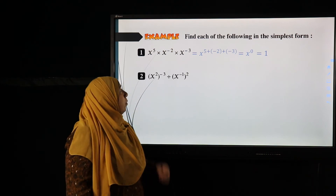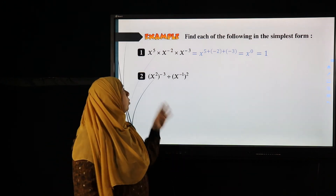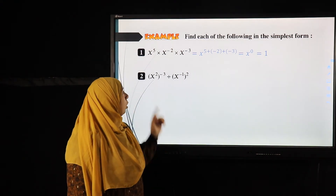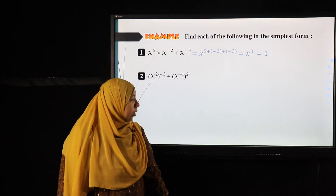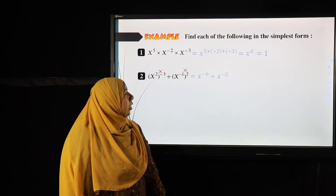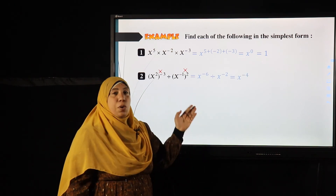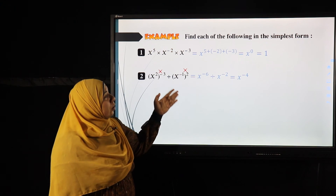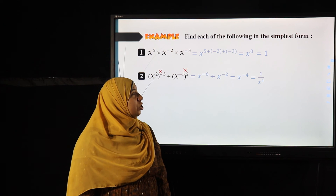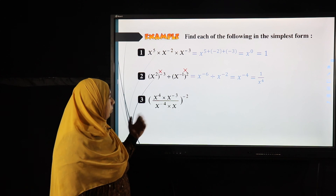Don't panic when you see letters — they work the same as numbers. x squared or negative three divided by x to the power negative one, all to the power two: distribute the powers by multiplying, giving x to the power negative six on top divided by x to the power negative two. Subtracting powers gives x to the power negative four. Since negative four is not simplest form, I change it upside down: one over x to the power four.